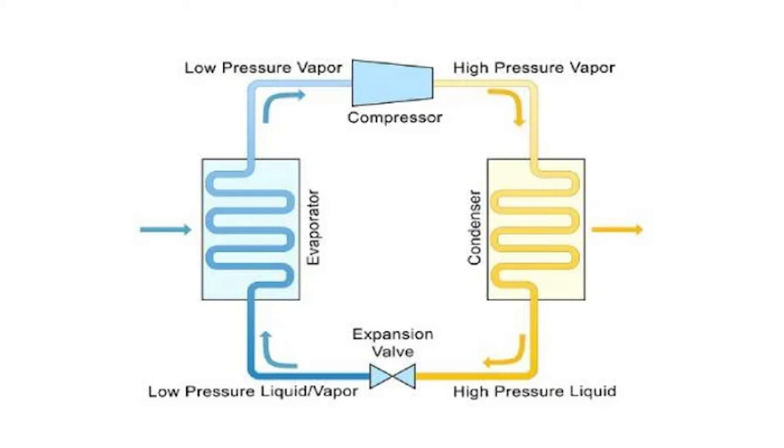The compressor raises the pressure of the refrigerant before it enters the condenser, and thereby raises its temperature high enough to allow for the heat exchange necessary to change its state. The compressor therefore serves the dual purpose of raising the pressure and temperature of the refrigerant entering the condenser, as well as circulating the refrigerant through the system.